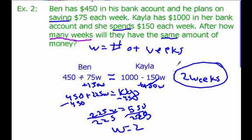Whenever we see the word 'same,' that is telling us where our equal sign goes. So this equation models our situation, and then we just solve it to get an answer of two weeks.